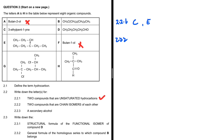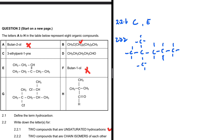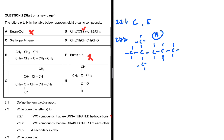Let's sketch compound B since there is a lot going on there. B has three carbons, three hydrogens, then a carbon with two branches, followed by two carbons with two other groups forming part of the branch, and finally a last carbon. Now that it's sketched it's much easier to understand.